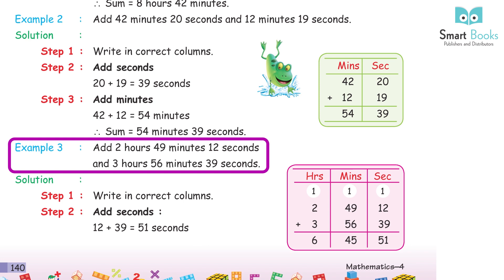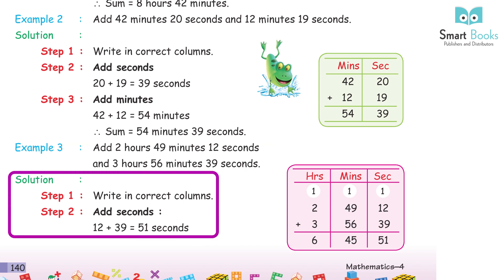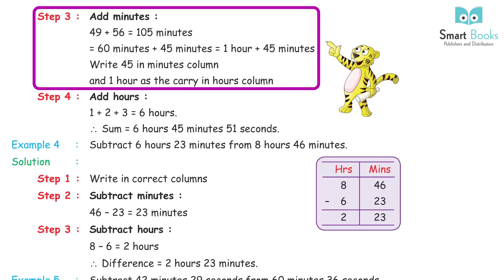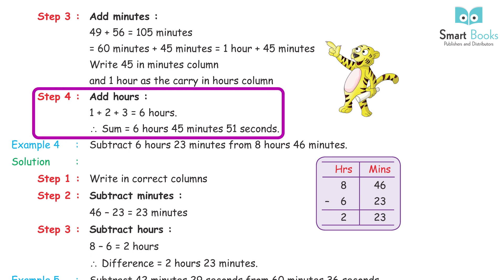Example 3: Add 2 hours 49 minutes 12 seconds and 3 hours 56 minutes 39 seconds. Step 1: Write in correct columns. Step 2: Add seconds — 12 + 39 = 51 seconds. Step 3: Add minutes — 49 + 56 = 105 minutes = 60 + 45 minutes = 1 hour 45 minutes. Write 45 in the minutes column and carry 1 hour. Step 4: Add hours — 1 + 2 + 3 = 6 hours. Sum = 6 hours 45 minutes 51 seconds.